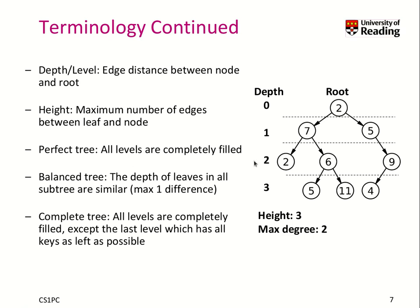A perfect tree means that all levels are completely filled — that is not the case here because at level 2, node 5 has no second child, so one node is missing. A balanced tree means the depth of the leaves in all subtrees is similar — basically like a perfect tree, but on the last level you may have some items missing. This is not a balanced tree either because again we are missing one node. A complete tree is similar to a balanced tree; however, it means that on the last level, at maximum depth, the keys are as far left as possible — which isn't the case in this tree either.